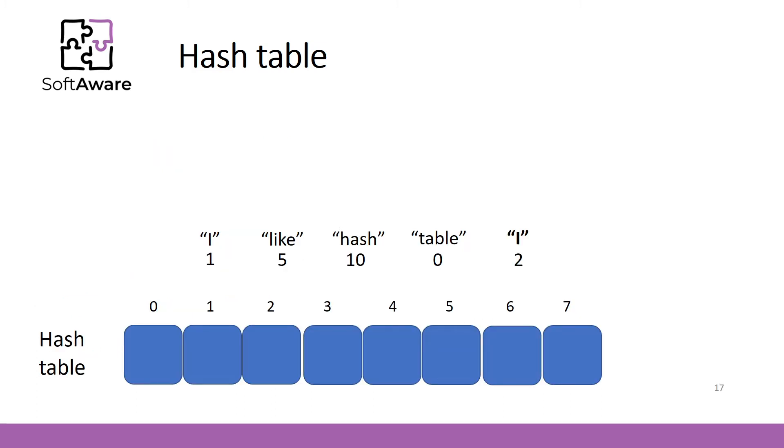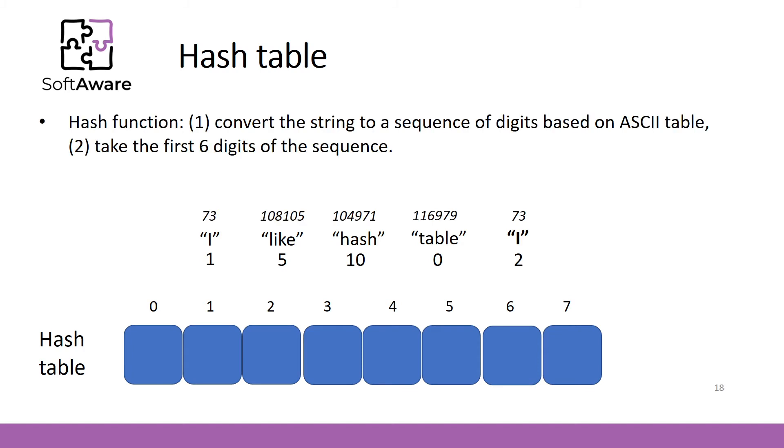Now we know some theory behind the hash function. Let's find out if we could find a better solution for mapping these words to the underlying array. We have reduced the size of our array, now its capacity is equal to 8 and we need to define some hash function which would do the work for us. We can define the hash function as follows. First, convert the string to a sequence of digits based on ASCII table. Second, take the first 6 digits of the sequence.